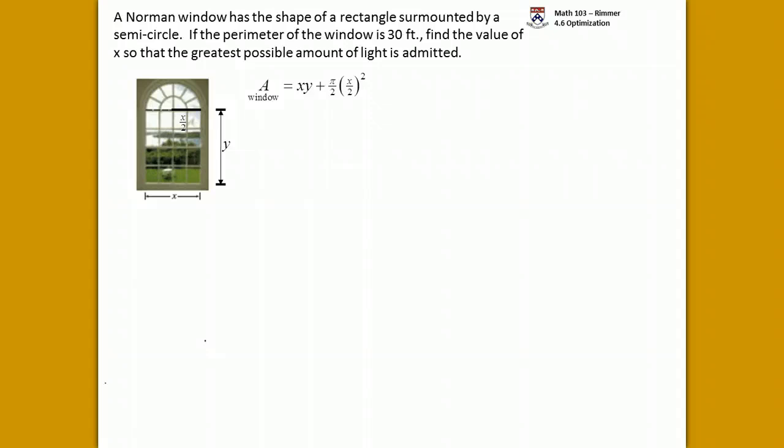And then there is the circle, which is half, so pi over 2 times the radius squared. The radius is x over 2. So squaring out, we get x squared over 4, so pi over 8 x squared.